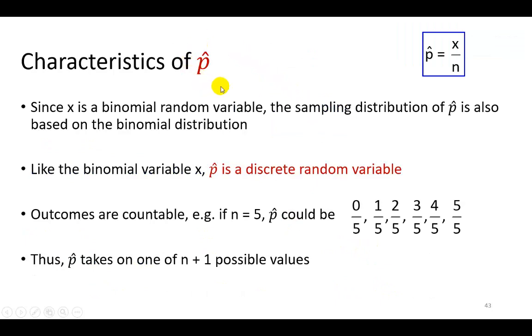Let's learn a little bit more about the characteristics of this p hat, which is the percentage value. We conclude here that since x is a binomial random variable, the sampling distribution of p hat is also going to be based on the binomial distribution. And like the binomial variable x, the number of successes, the proportion of successes is going to be a discrete random variable.